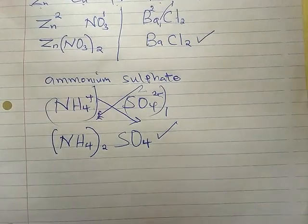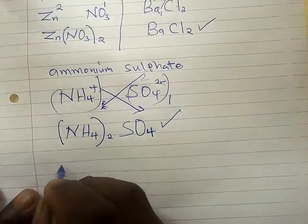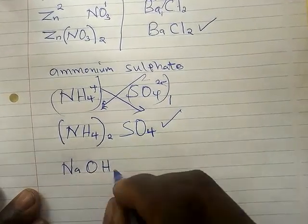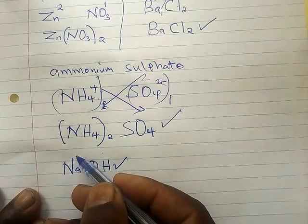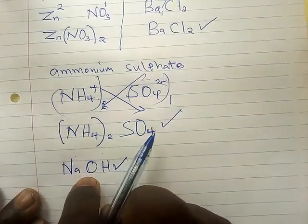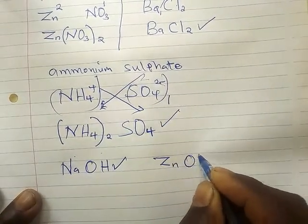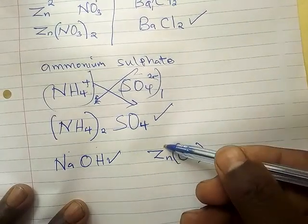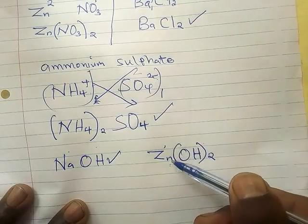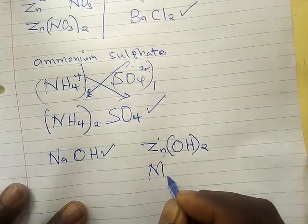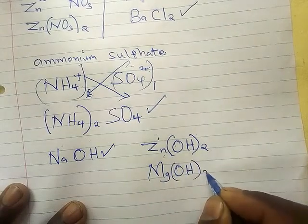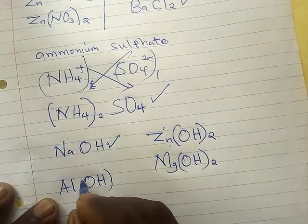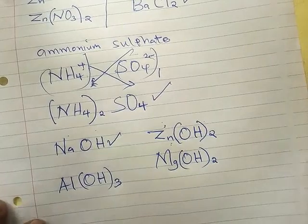Hydroxides: sodium hydroxide — sodium and OH. Hydroxide has valency one, sodium has valency one, so the formula remains NaOH. Zinc hydroxide: zinc has valency two, hydroxide has valency one, so zinc gets 1 and hydroxide gets 2 — zinc hydroxide is Zn(OH)2. Magnesium hydroxide is Mg(OH)2 for the same reason. Aluminium hydroxide: aluminium has valency three, so the formula is Al(OH)3.